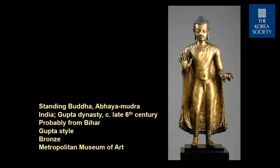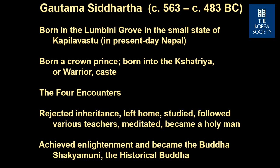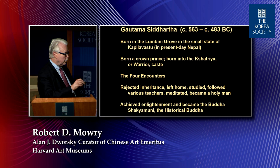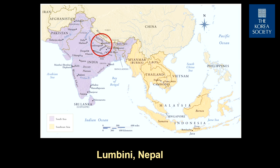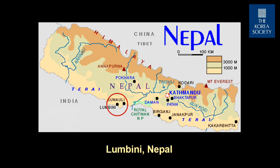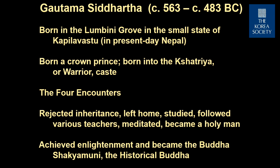He was born a crown prince — born Gautama Siddhartha in what today is Nepal. Buddhism arose first in northeastern India and then in northern India generally. He was born in the Lumbini Grove, right on the border between Nepal and India today, and he was born into the warrior caste, which means he should have taken up the life either as a warrior, a military person, or as a statesman.